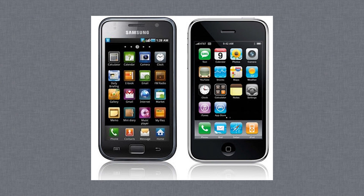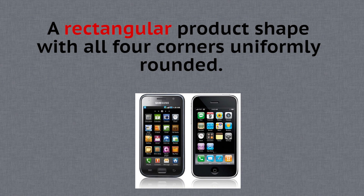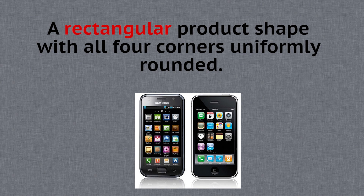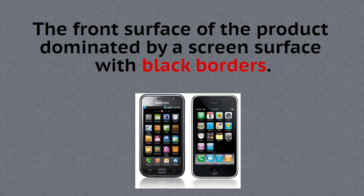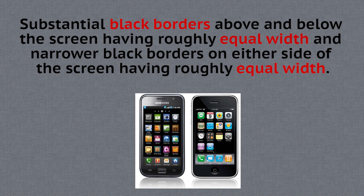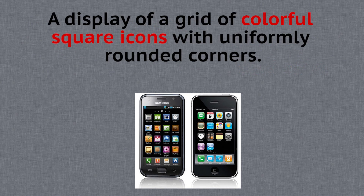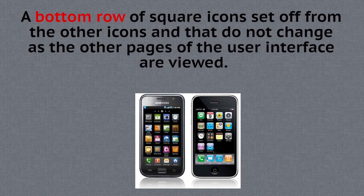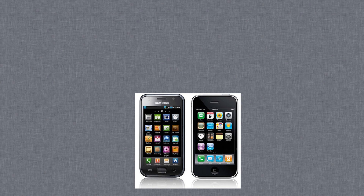This is probably an image you've seen on the internet before. On April 18th, 2011, Apple sued Samsung for the Galaxy S1 looking too much like their iPhone, and this is what they sued Samsung for copying word for word: a rectangular product shape with all four corners uniformly rounded; the front surface of the product being dominated by a screen with black borders; substantial black borders above and below the screen having roughly equal width, and narrower black borders on either side of the screen having roughly equal width; a display of a grid of colorful icons with uniformly rounded corners, and a bottom row of square icons set from the other icons that do not change as the pages of the interface are viewed. So let's break these down one by one.